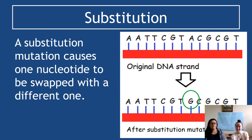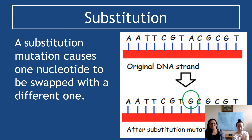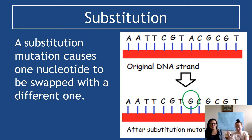Substitution is different — it is not frame shift. It is the third type of point mutation. Substitution does what it says: like a substitution in sport where you swap one player for another, here we swap one base for another base. Looking at the top strand, in the middle it reads GTA, and after the substitution, the bottom strand now reads GTG — that A has simply been swapped for a G.